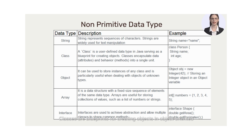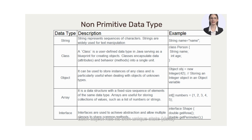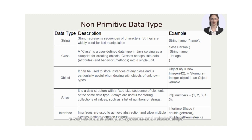Classes are blueprints for creating objects in object-oriented programming. A class defines the properties, attributes, and behaviors — or methods — that all objects of that class will have. Objects are instances of classes that represent real-world entities, concepts, or data structures within a program. Each object has its own unique state, data, and behavior based on the class it belongs to. Objects encapsulate data and behaviors, providing a way to model complex systems and relationships in software development.